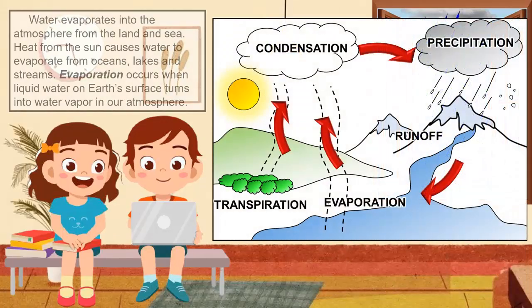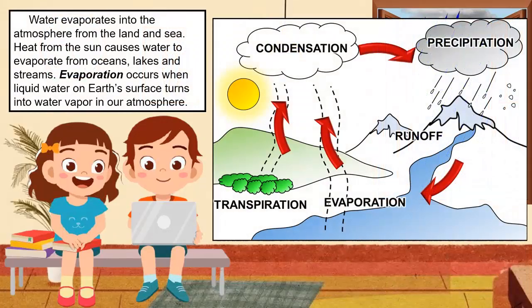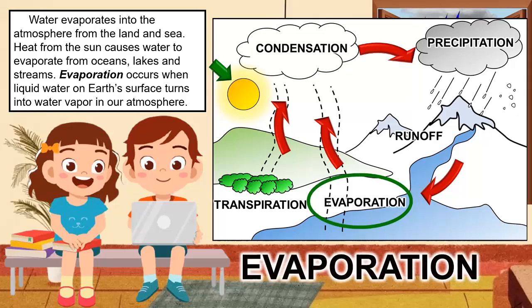Water evaporates into the atmosphere from the land and sea. Heat from the sun causes water to evaporate from oceans, lakes, and streams. Evaporation occurs when liquid water on earth's surface turns into water vapor in our atmosphere.